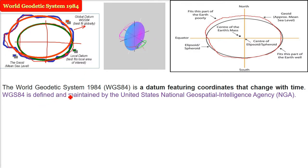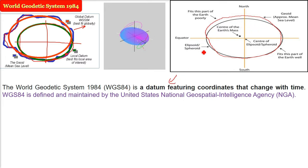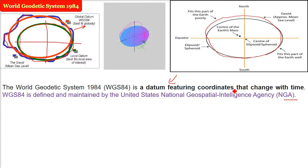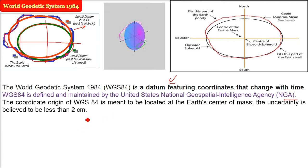A datum is nothing but the base from which you start computation. It will have its own axis, and other points are computed using that axis. World Geodetic System 1984 is a datum featuring coordinates that change with time. It is a geographic coordinate system — GCS. WGS 84 is defined and maintained by NGA, the United States National Geospatial Intelligence Agency.